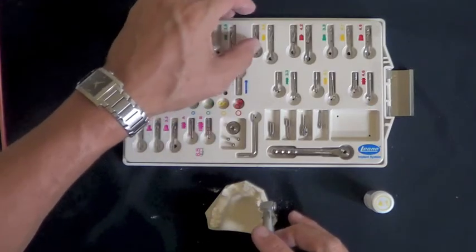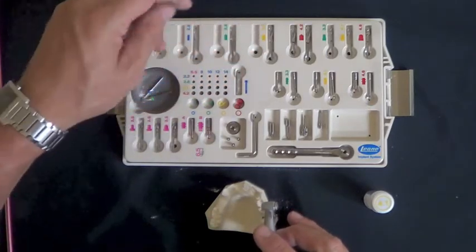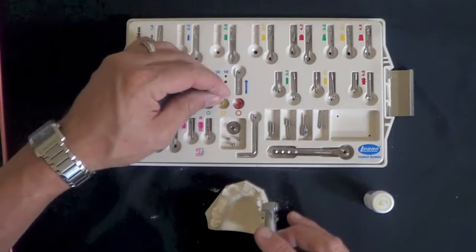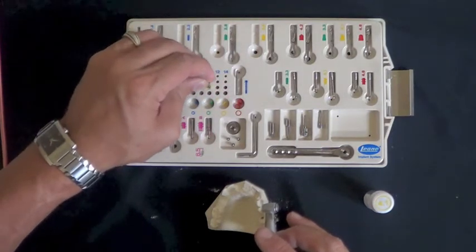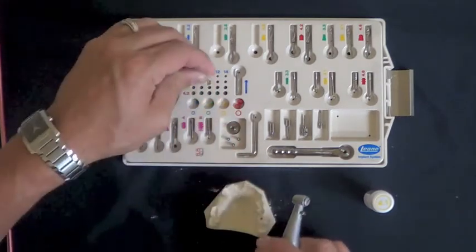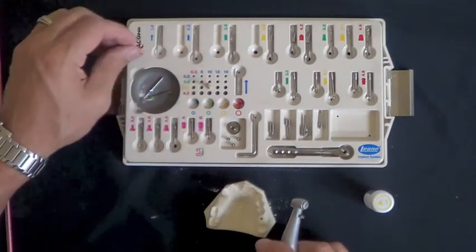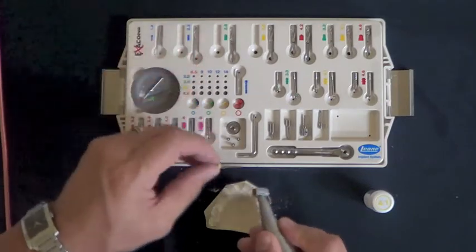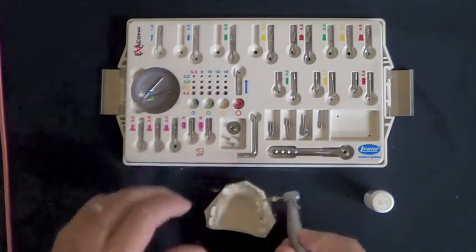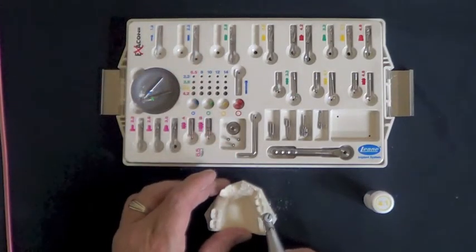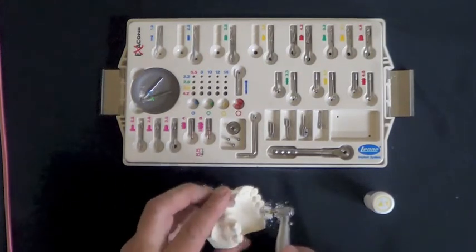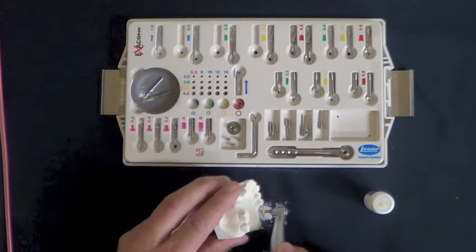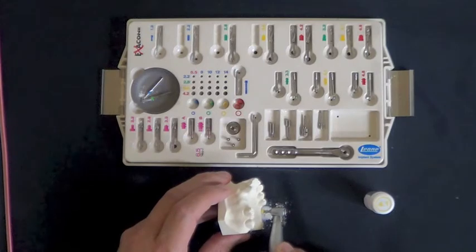And the final drill then would be for the 4.1 implant, the 3.5 millimeter diameter drill. Again the ringlet on the drill, place it in the 10 millimeter length depth indicator on the drill, and then again take this down to the length of the osteotomy. So there we're set at length.